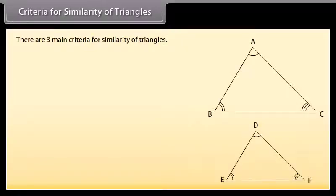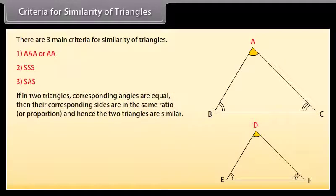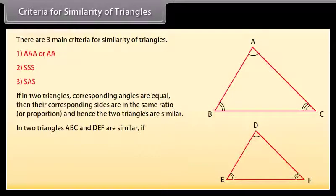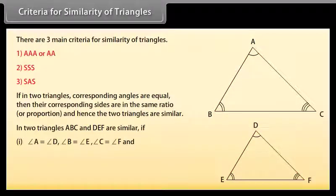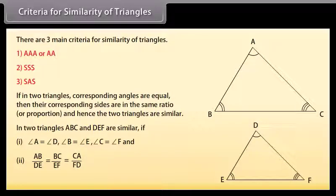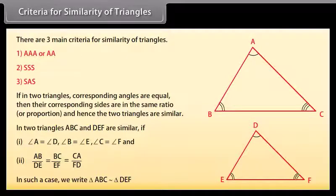Criteria for similarity of triangles. There are three main criteria: 1. AAA or AA, 2. SSS, 3. SAS. If in two triangles the corresponding angles are equal, then their corresponding sides are proportional, and hence the triangles are similar. In two triangles ABC and DEF are similar if: angle A equals angle D, angle B equals angle E, angle C equals angle F, and AB upon DE equals BC upon EF equals CA upon FD. In such a case we write triangle ABC is similar to triangle DEF.